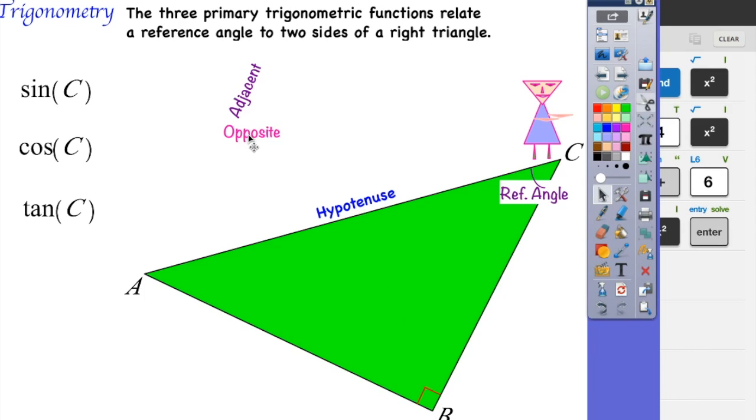Then we're going to select our opposite side. Well, if C is my reference angle, I'm going to go all the way across until I hit the side that is opposite from my reference angle. So that leaves me with the adjacent side being BC.